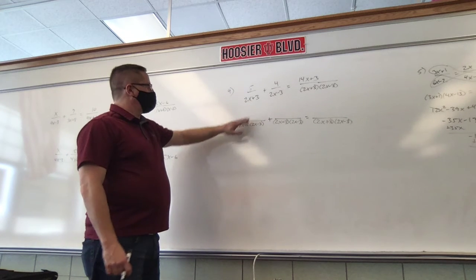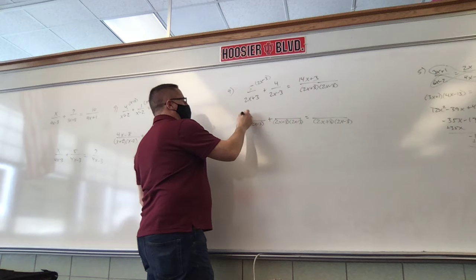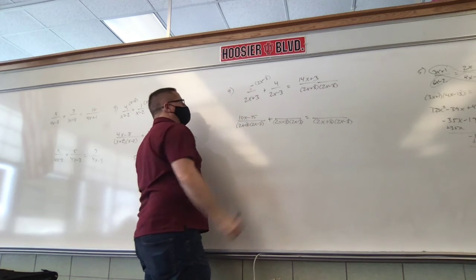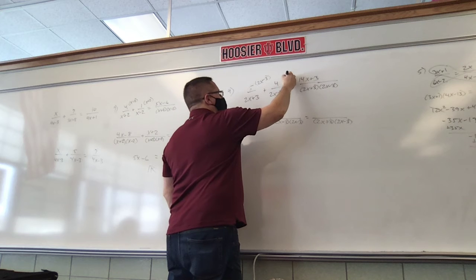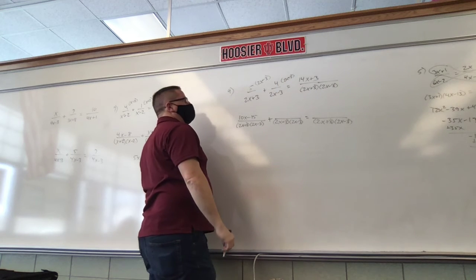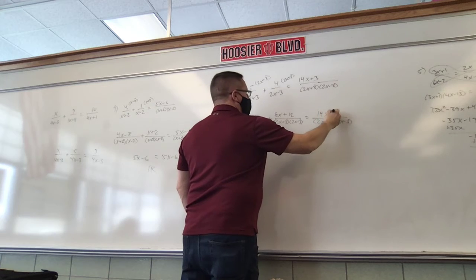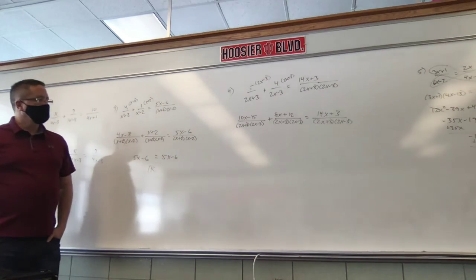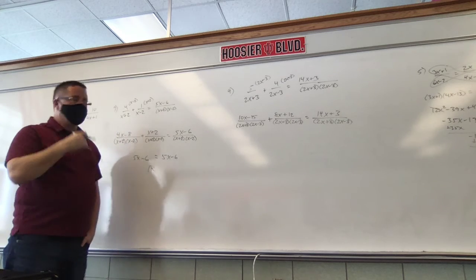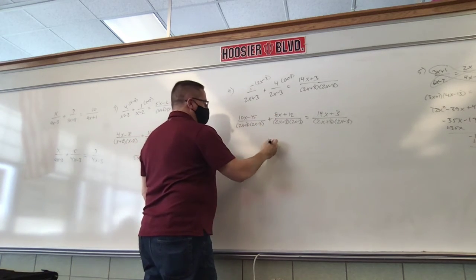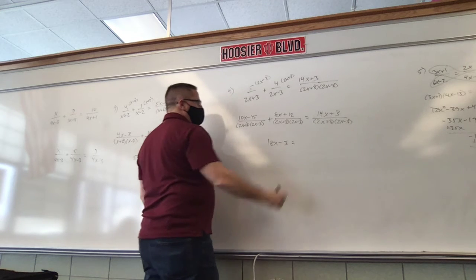To make 2x plus 3 into (2x plus 3)(2x minus 3), we multiply top and bottom by 2x minus 3. 5 times 2x is 10x, 5 times negative 3 is negative 15. For 2x minus 3, we multiply by 2x plus 3: 4 times 2x plus 3 is 8x plus 12. The right side denominator is already the same, so leave 14x plus 3 alone. Ignoring the denominators: 10x plus 8x is 18x, negative 15 plus 12 is negative 3, equals 14x plus 3.